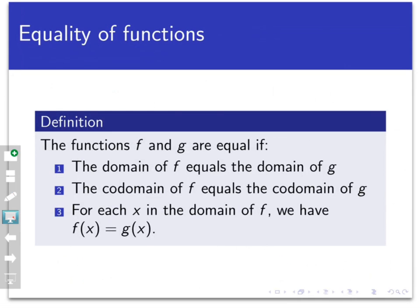That leads us to our big definition: the functions f and g are equal if three things happen. First, the domain of f has to equal the domain of g. The co-domain of f has to equal the co-domain of g. And then for every x in the domain of f, f of x has to equal g of x. This is what happened with our last example — the domains were equal for those two functions going from the integers to the integers, the co-domains were equal, and at every point in the domain of f the functions agreed with each other.